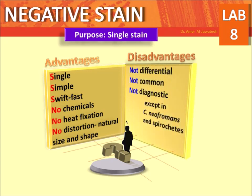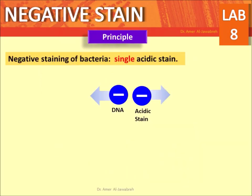Advantages: single, simple, swift or fast; no chemicals, no heat fixation, no distortion — maintaining natural size and shape of bacteria. Disadvantages: not differential, not commonly used, and not diagnostic except in Cryptococcus neoformans and spirochetes.